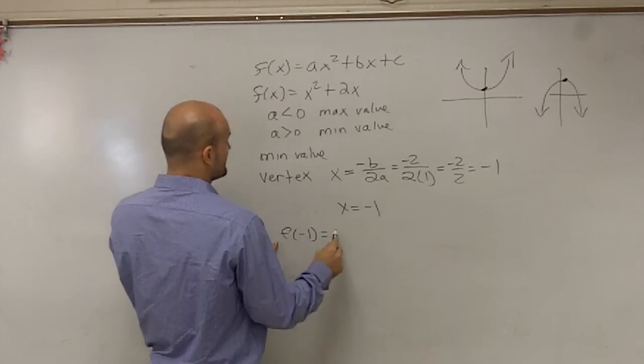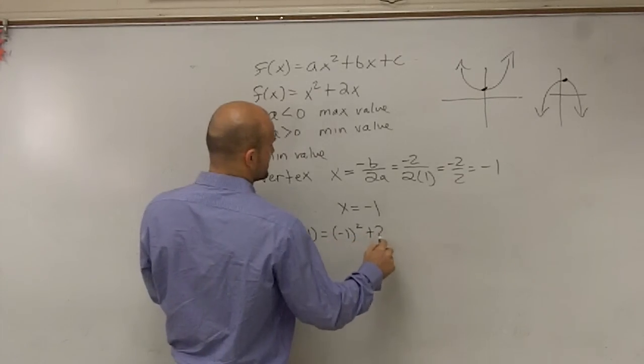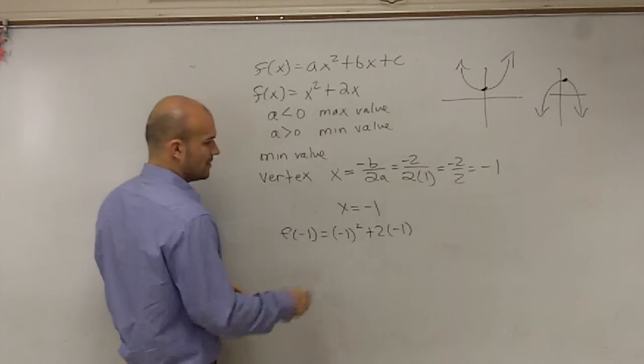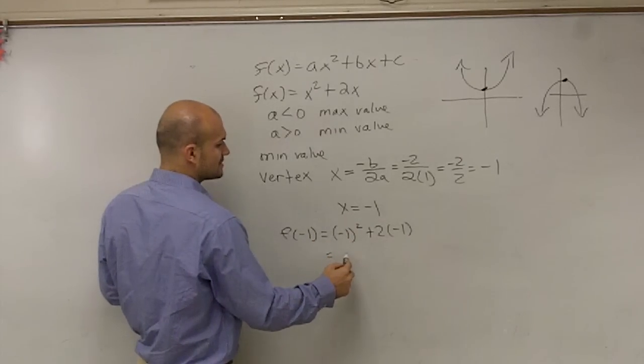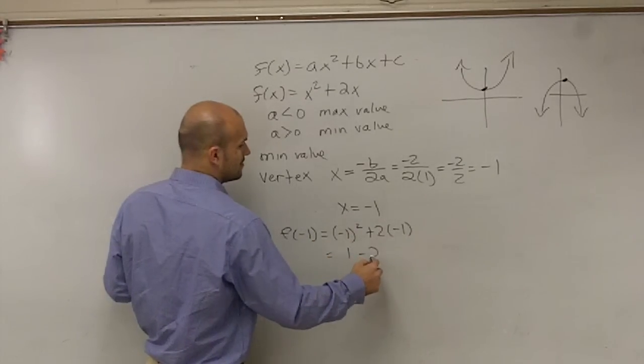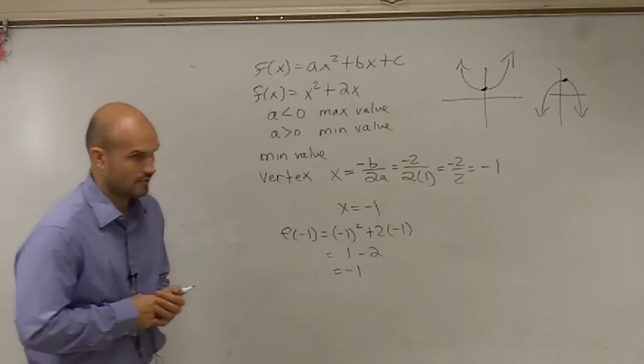So f of negative 1 is going to equal negative 1 squared plus 2 times negative 1. Negative 1 squared is going to be a positive 1 minus 2, which equals negative 1.